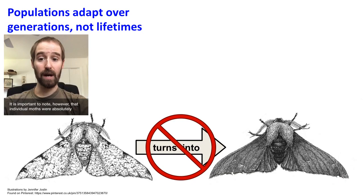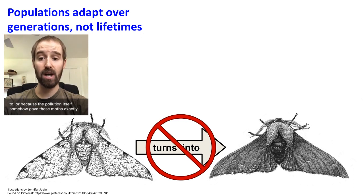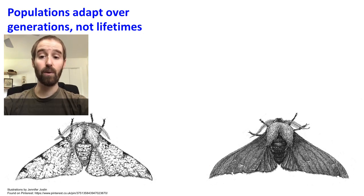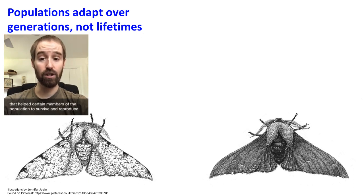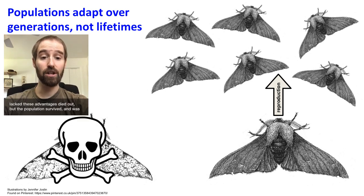It is important to note, however, that individual moths were absolutely not changing from white to black, because moths are no more able to change their coloration than we are able to change our eye color or skin color. They didn't adapt because they wanted to, or because they needed to, or because the pollution itself somehow gave these moths exactly what they needed to survive. Rather, they were able to adapt because natural variations existed in their population that helped certain members to survive and reproduce even as the environment changed around them. Some individuals who lacked these advantages died out, but the population survived and was better suited to live in its new environment.